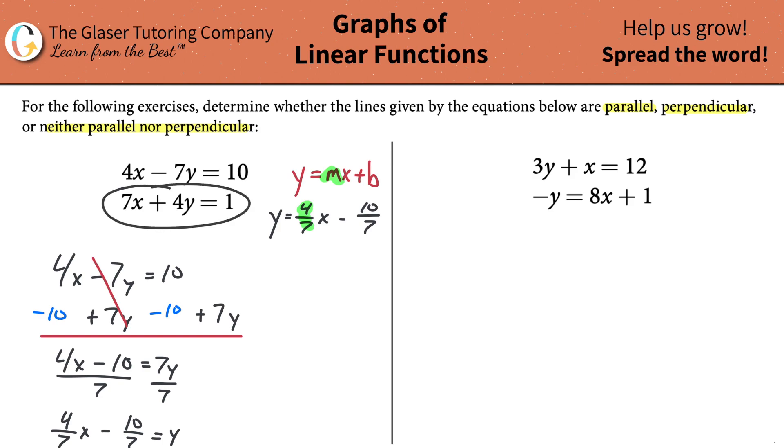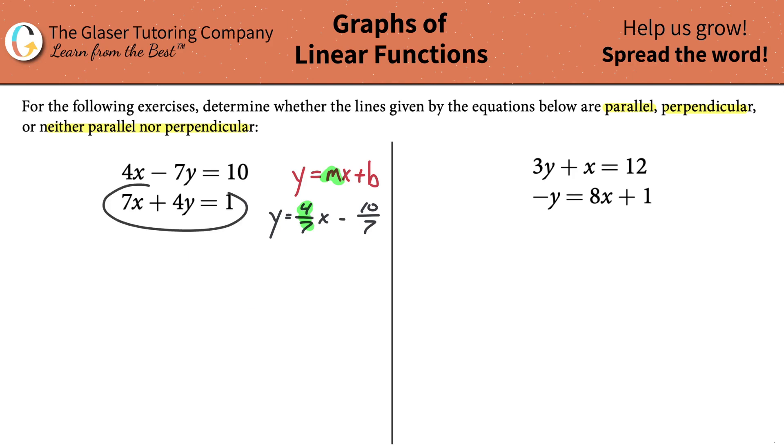Now what I need to do is do the same process for the second equation. So here we're going to do the same thing. Let's solve this bad boy for y. So we get 7x plus 4y is equal to 1.